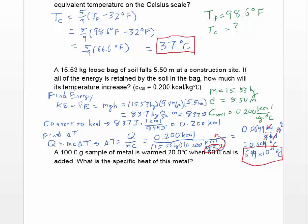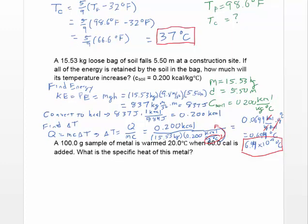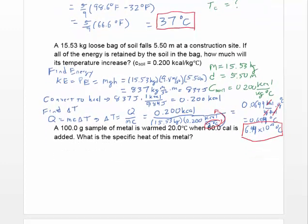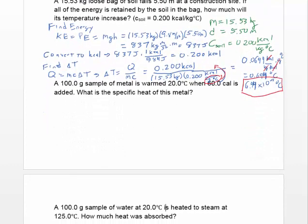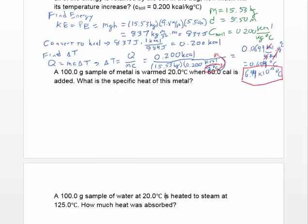There were several steps to get that final answer. Some problems are one step, some require multiple steps. Now let's look at the third problem: a 100 gram sample of metal is warmed 20 degrees Celsius when 60 calories is added. We want to find the specific heat of the metal.